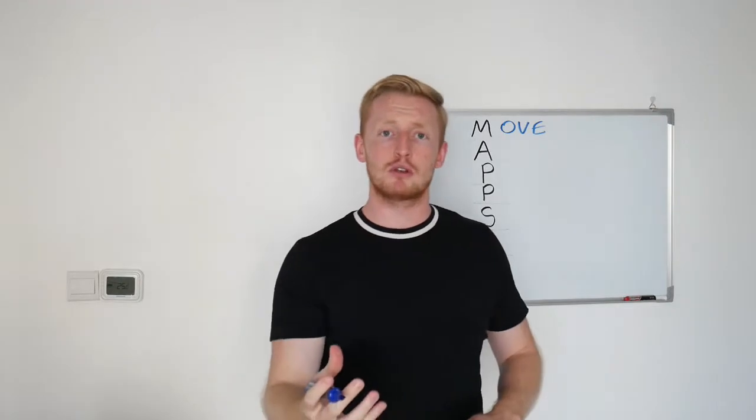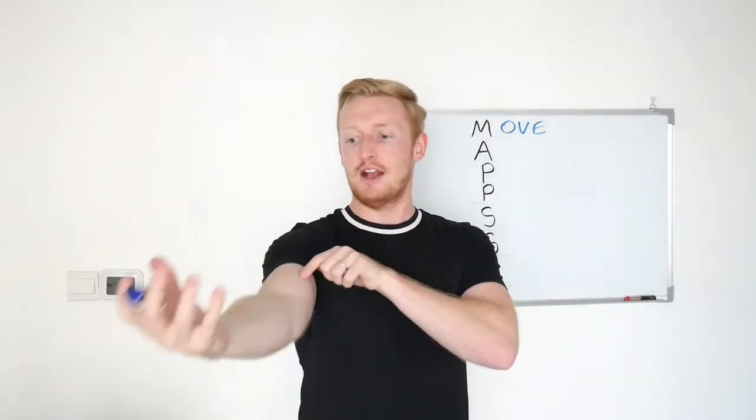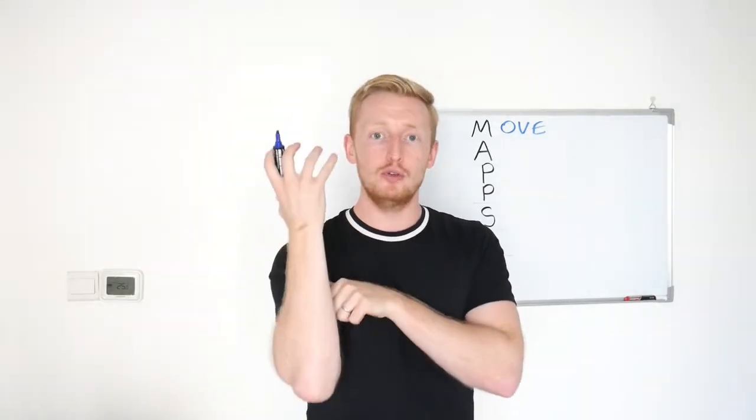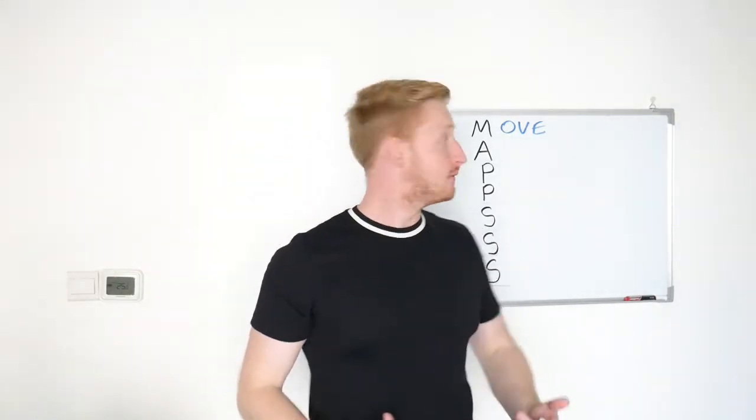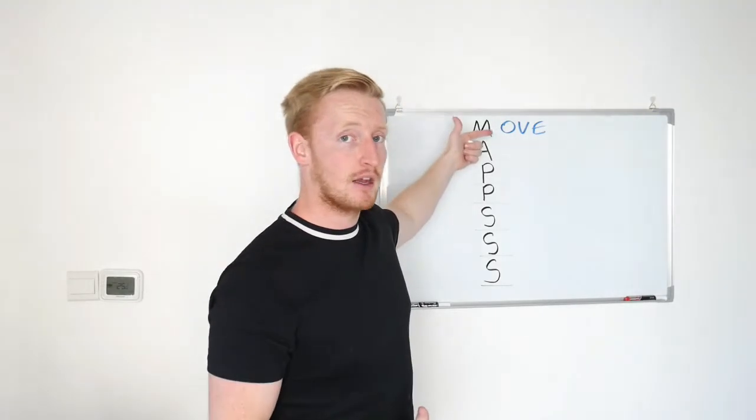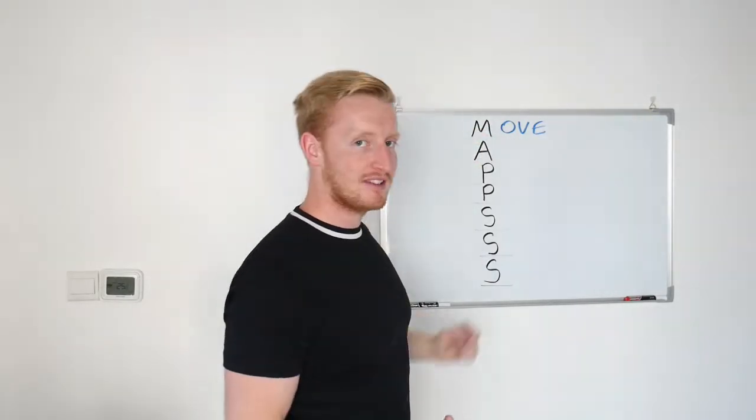Muscles attach to bones, muscles contract and shorten. As they contract and shorten, they pull on the bone, moving it. So we wouldn't be able to move unless we have a skeleton. So movement is number one.